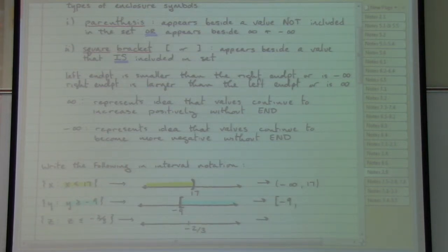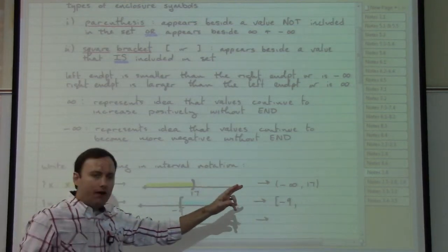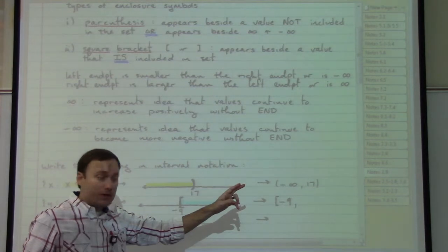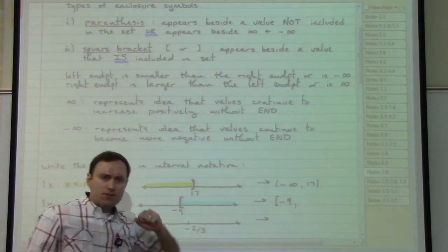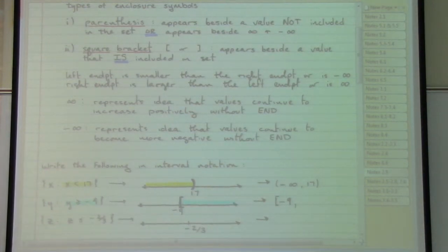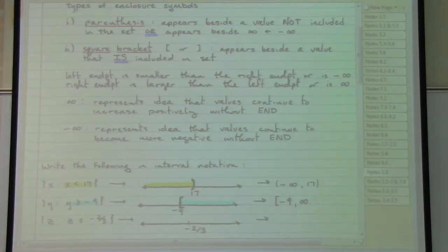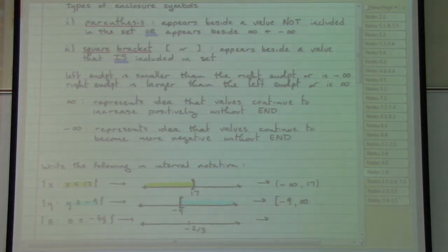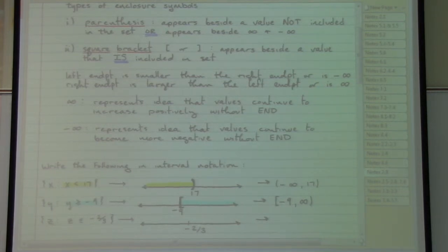How far to the right does my color appear? My color extends off to the right with no end. Off to the right are my positive numbers, so I need to use the infinity symbol to represent that the color never ends going in the positive direction. According to my rules, I always use a parenthesis beside that type of special symbol. So the interval notation is [-9, ∞).